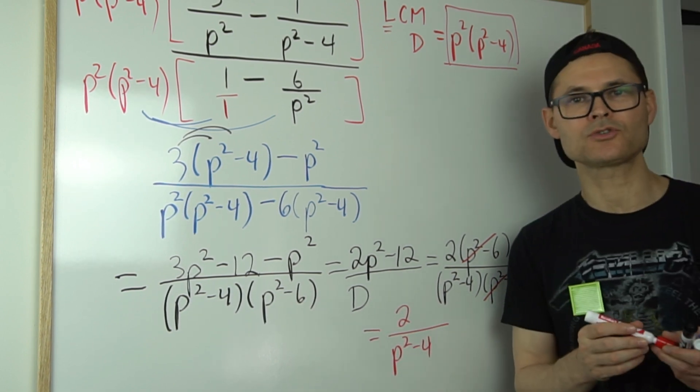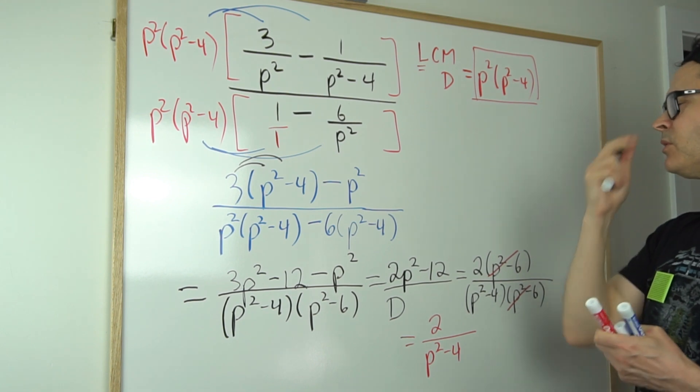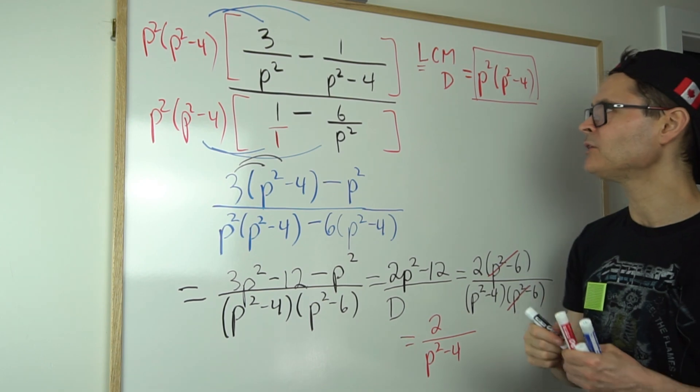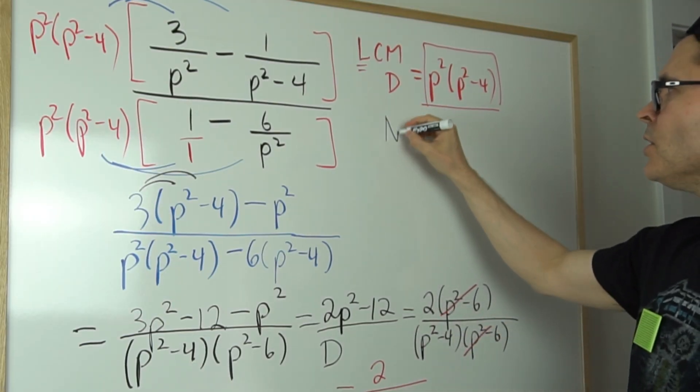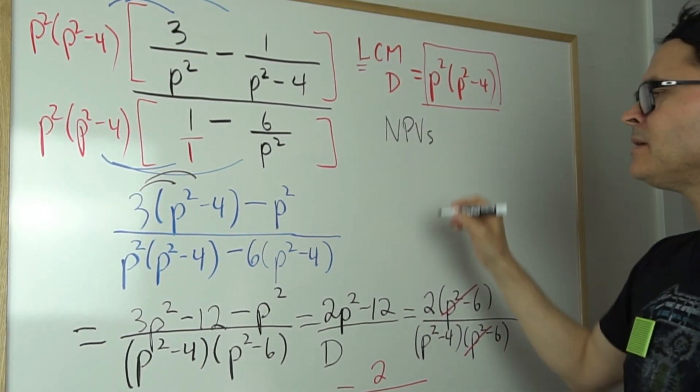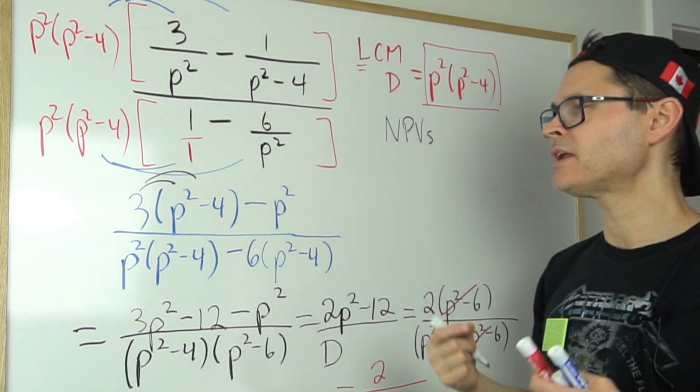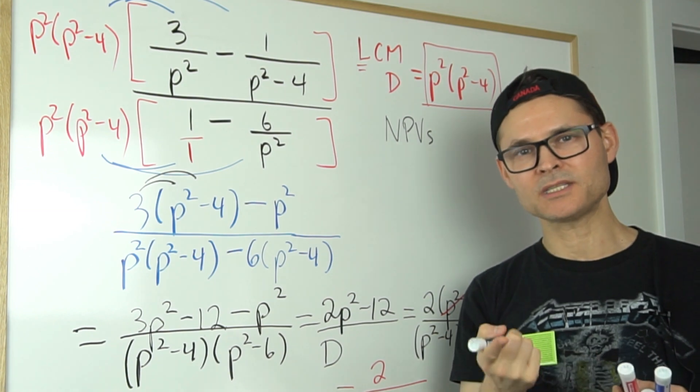Now I want to address restrictions or non-permissible values, because if you're learning this, you're probably also being taught non-permissible values or restrictions. NPVs—those are the numbers that p are not allowed to take on, because generally with rationals you can't divide by zero.